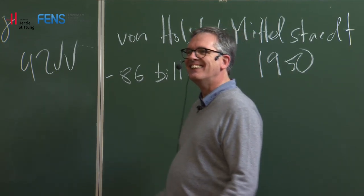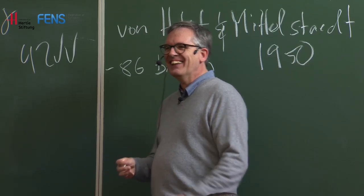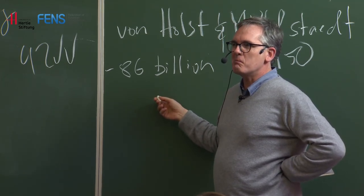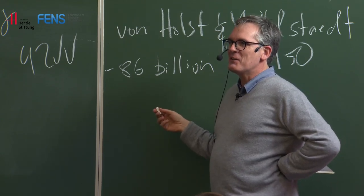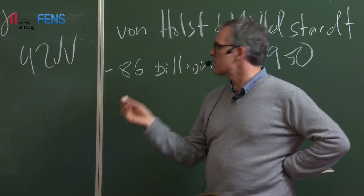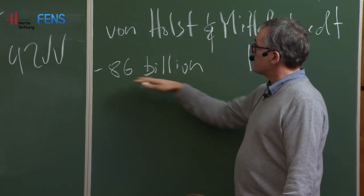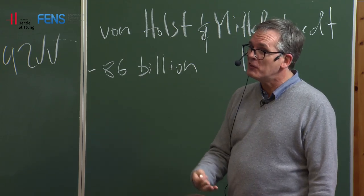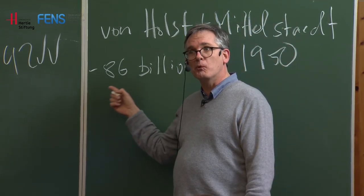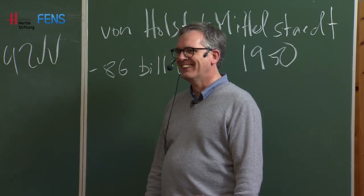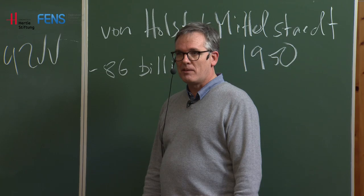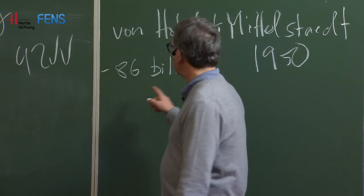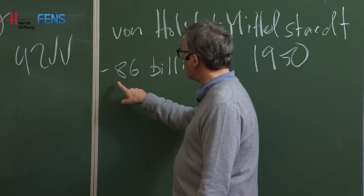Where do these neurons live? How are they distributed? First of all, is 86 billion the number of neurons, or what about other kinds of cells - glial cells and so on? Those are all good. Are there more estimates or guesses? This is a neuroscience conference after all.